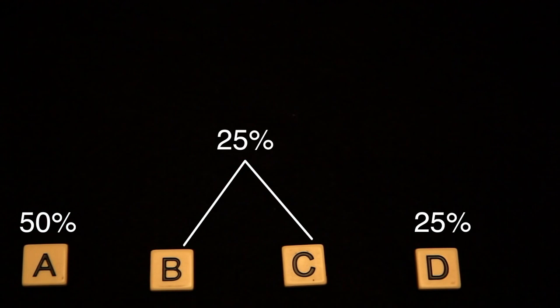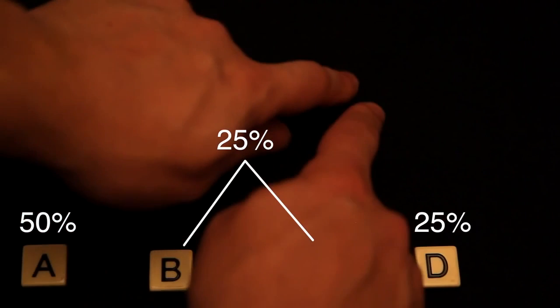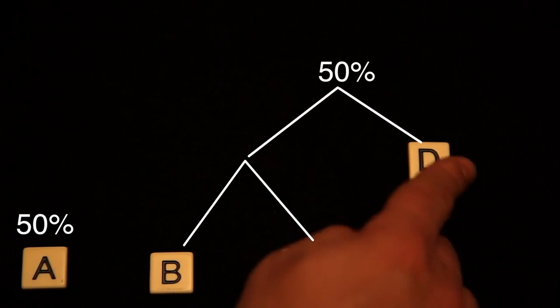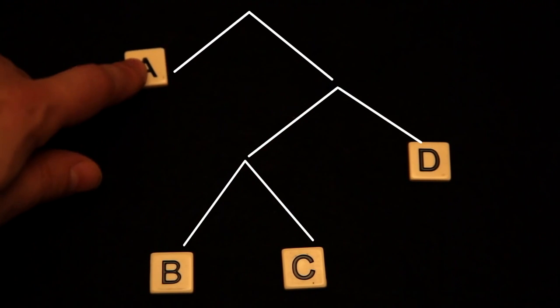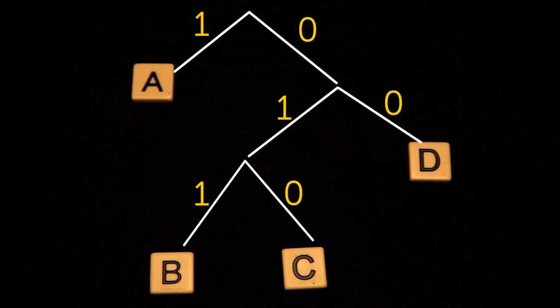We merge them into one and add the probabilities together. Then we repeat with the next two least likely nodes and continue merging until you have a single node at the top. Finally, we label the edges in this tree with 0 or 1 in any order.